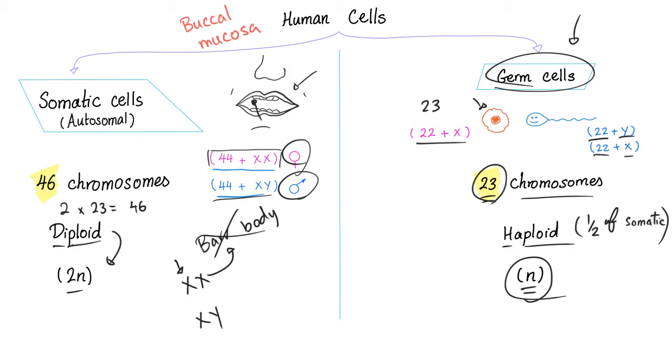If this ovum combines with this sperm, 22 plus Y, this will be 44 plus X, Y. This is a male. That's me. 22 plus X. And if it combines with this ovum, you get 44 plus X, X. That's a beautiful girl. Look at you.